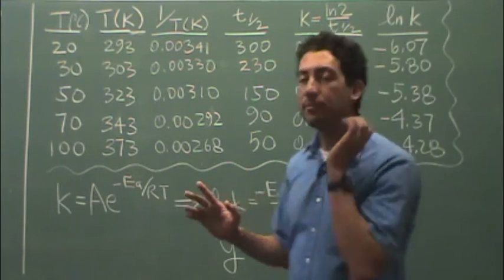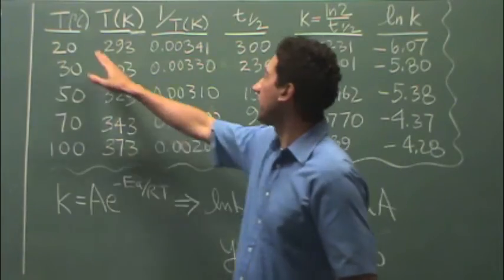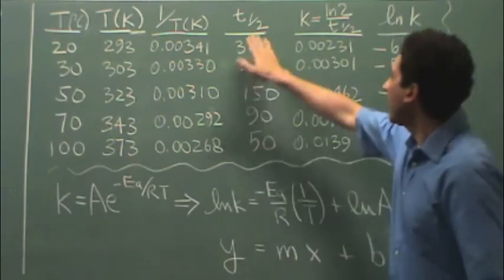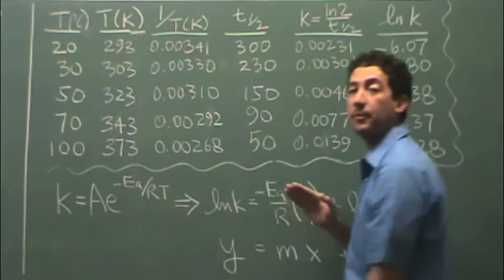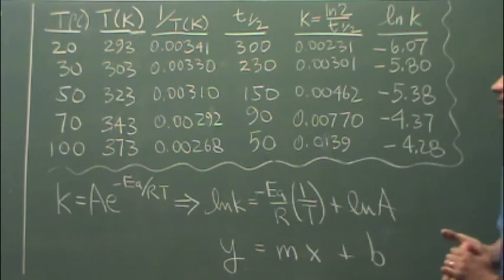So here's what you're going to do. You have two measured quantities, basically, from this part, the temperature and the half-life. Okay, so the first and the fourth column are measured. The rest are calculated.